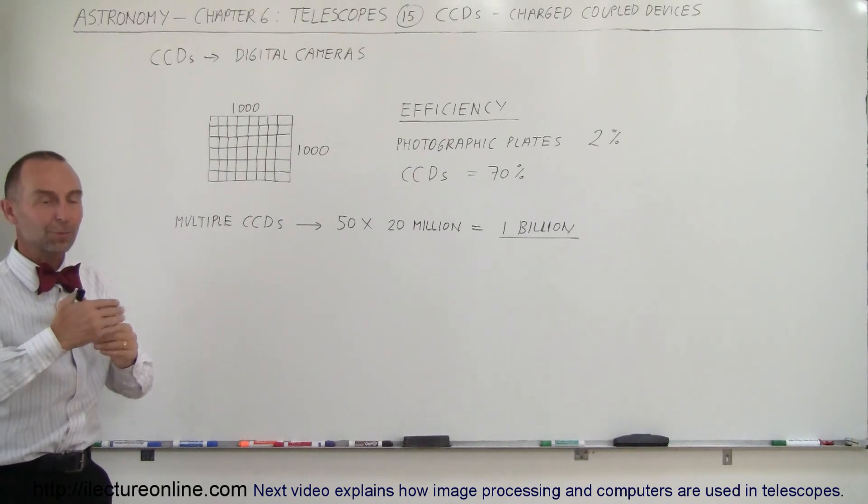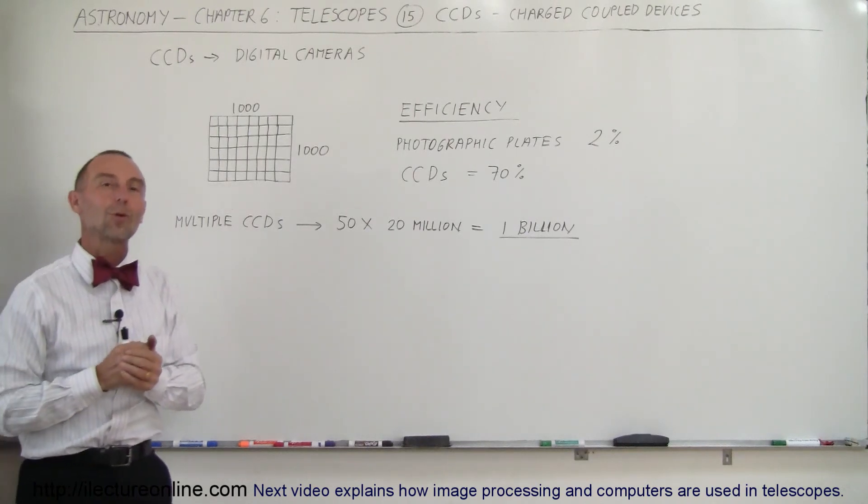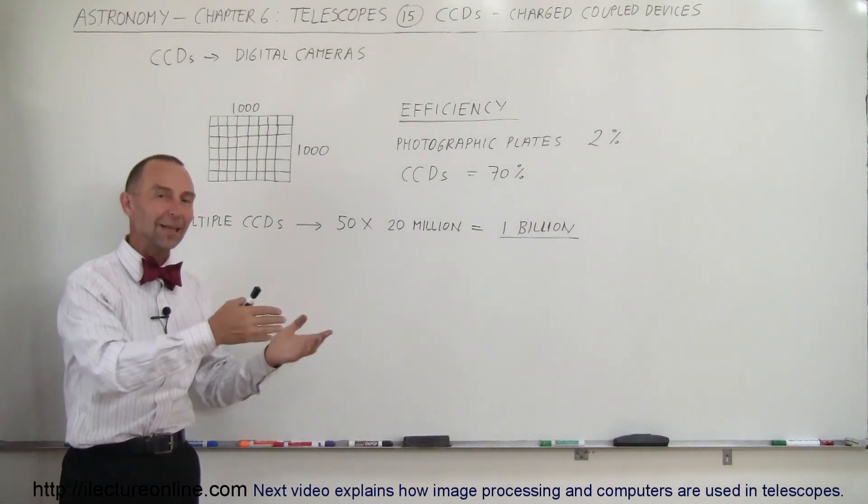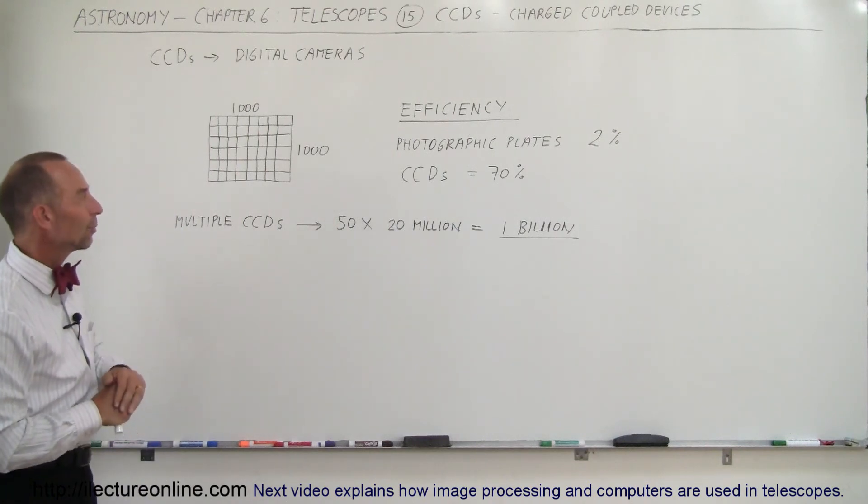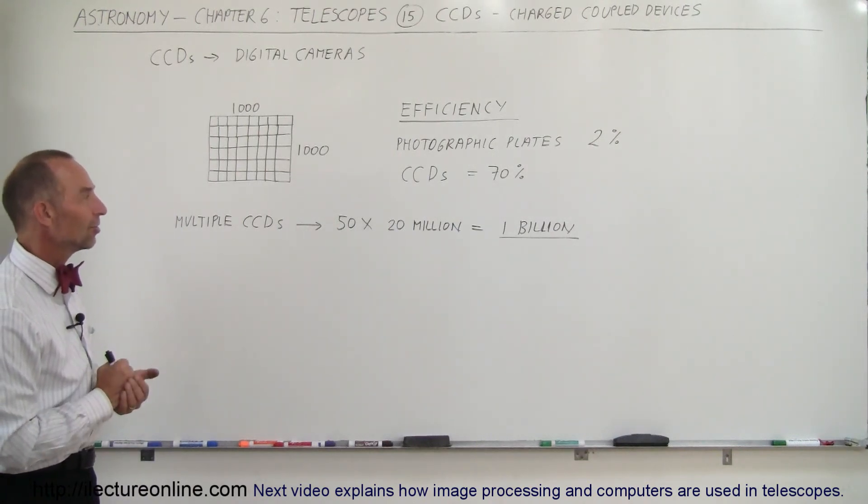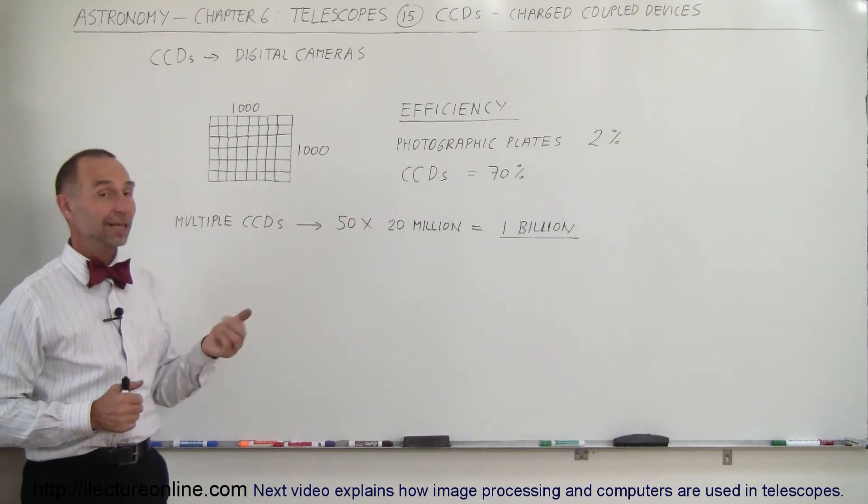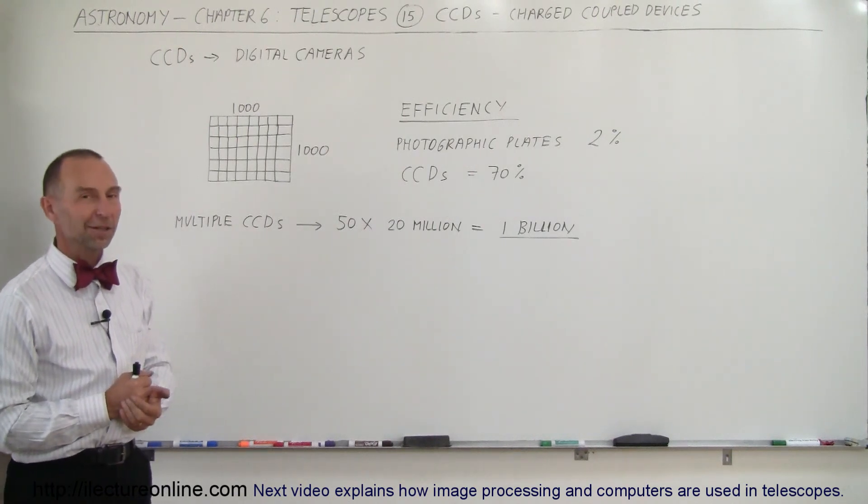You can take an infinite number of pictures, store them in a computer, scroll through them as much as you want, delete them, add more to them. It's absolutely amazing what we can do with our modern technology and the modern CCDs. For astronomy, it's been a big plus in our ability to take pictures.